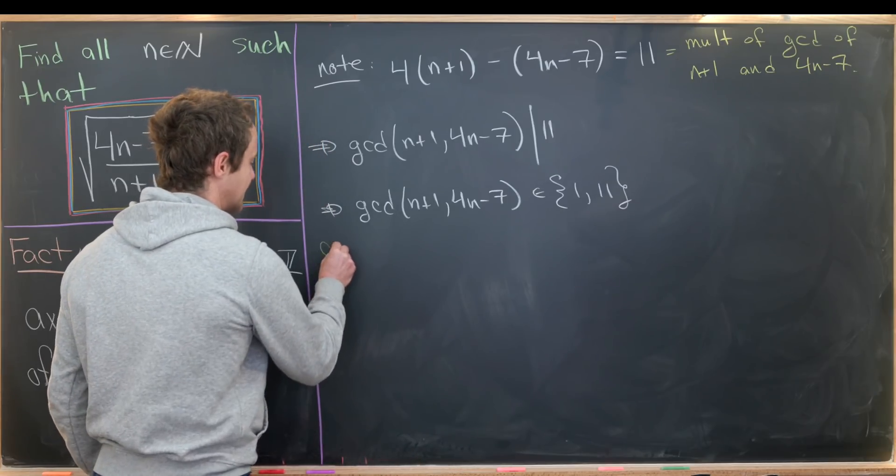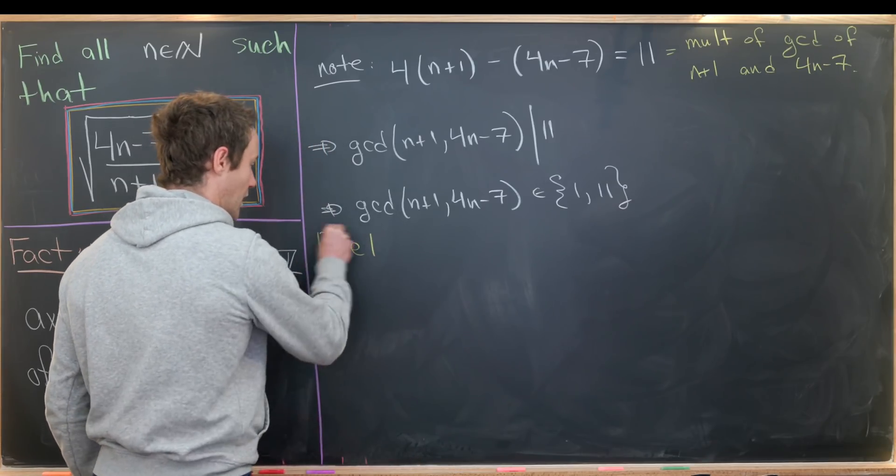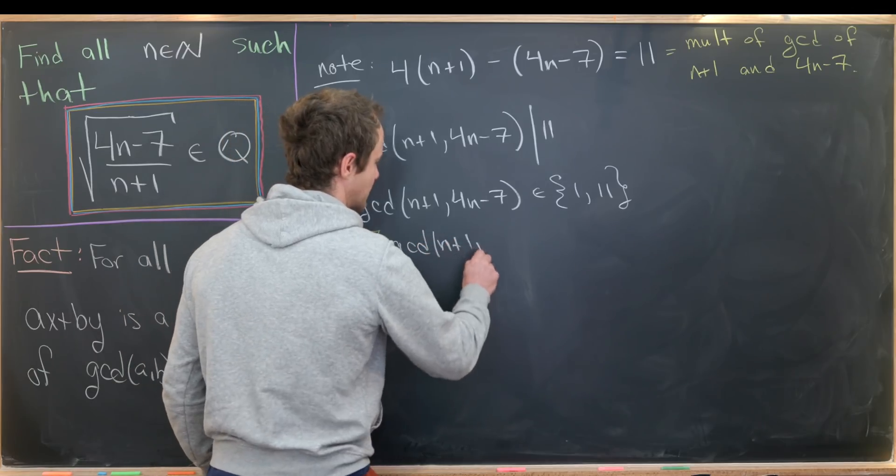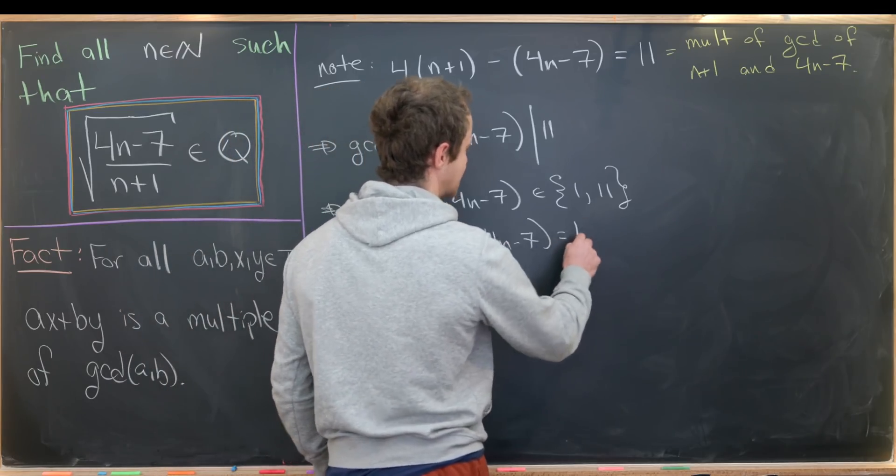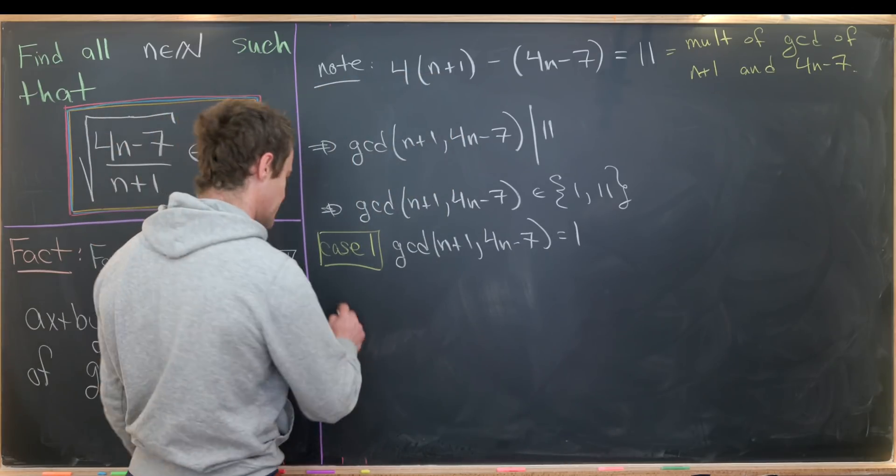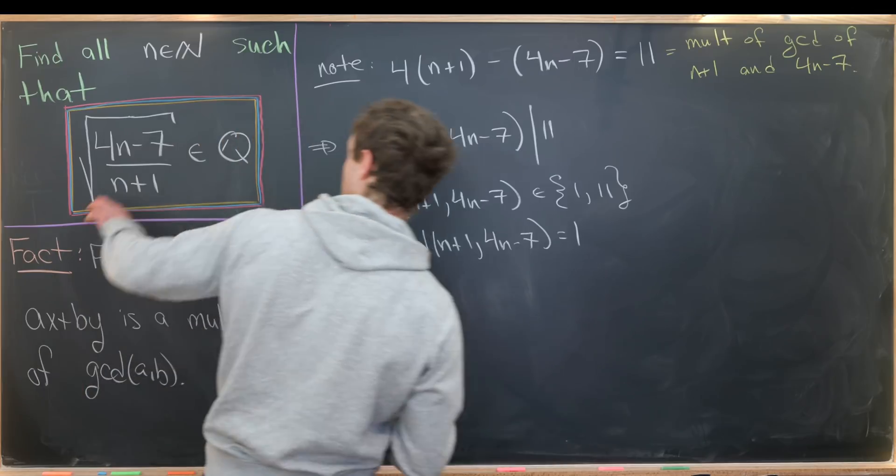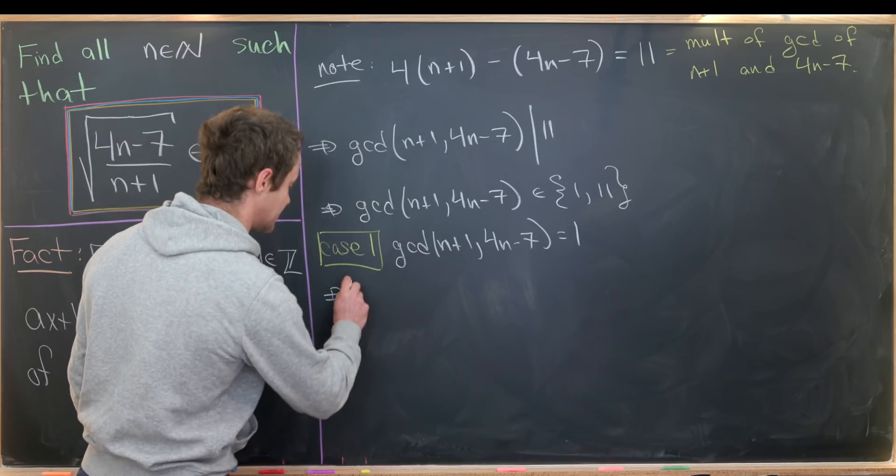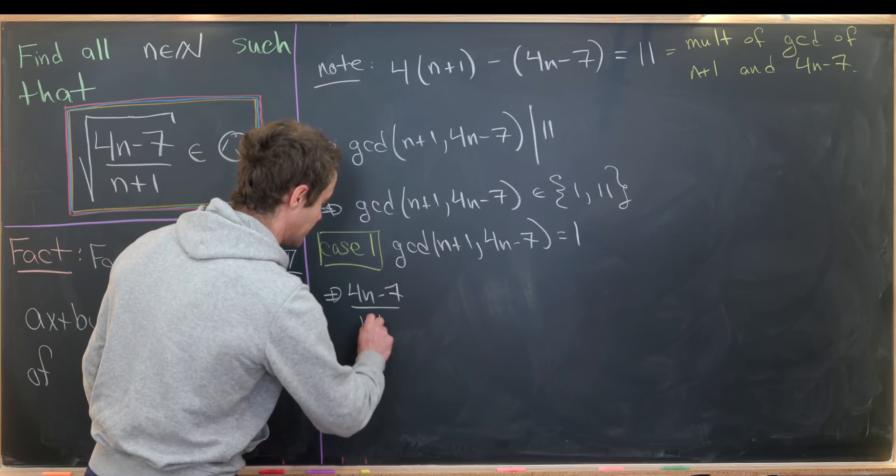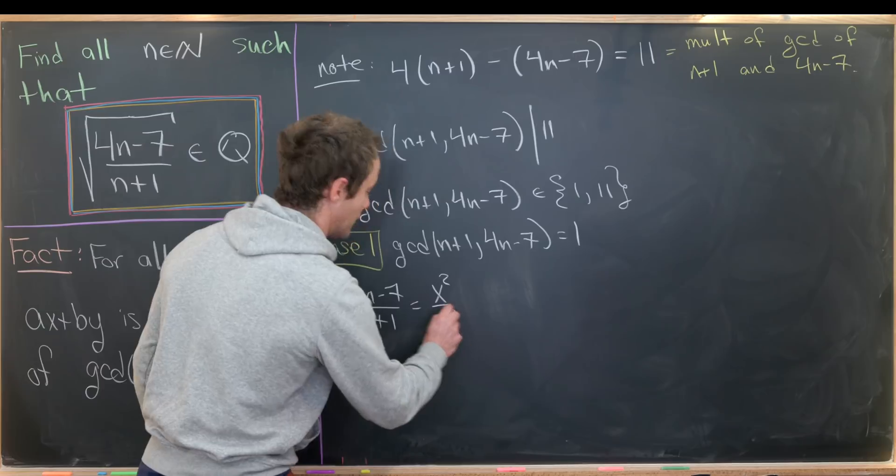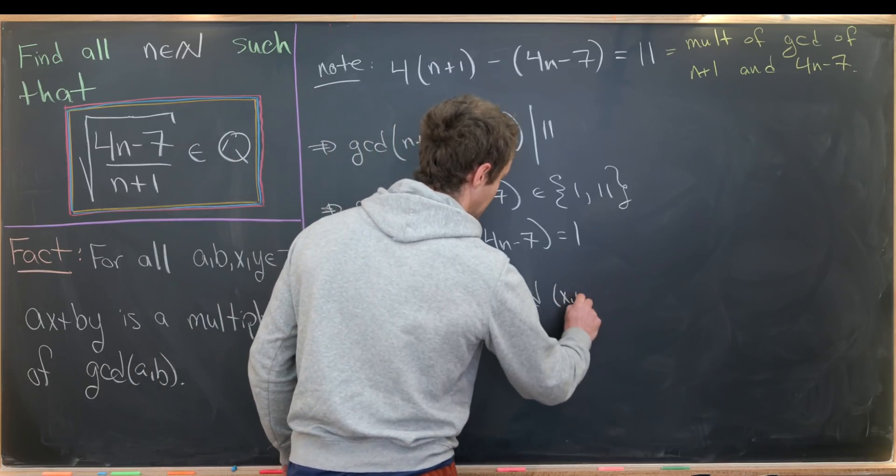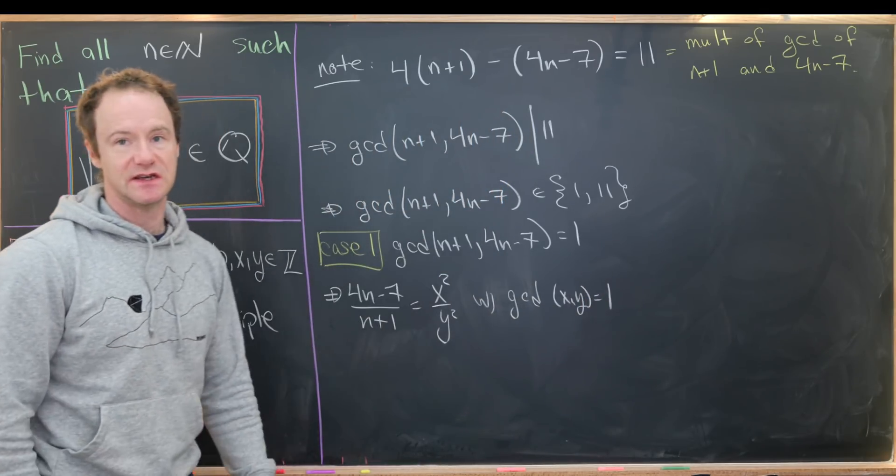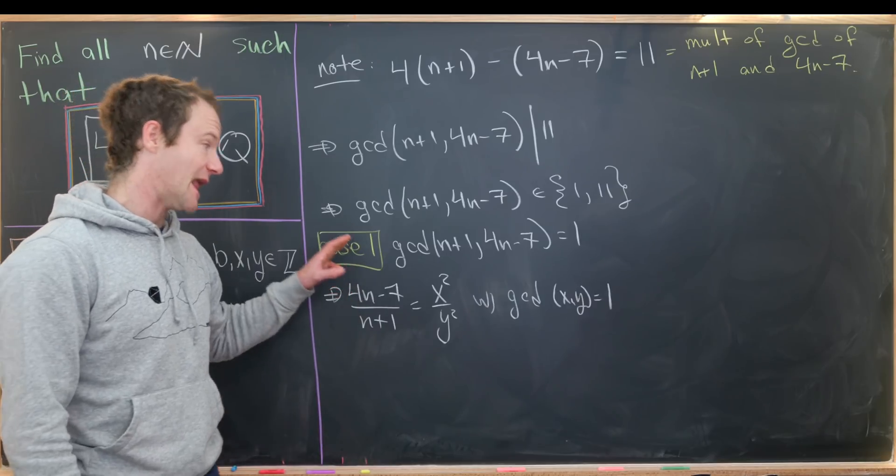So let's break this down into cases. Maybe case number one will be: what if these are relatively prime? In other words, we have gcd(n+1, 4n-7) = 1. Now let's notice that this condition, along with the fact that sqrt((4n-7)/(n+1)) is a rational number, tells us that (4n-7)/(n+1) = x²/y² with gcd(x,y) = 1.